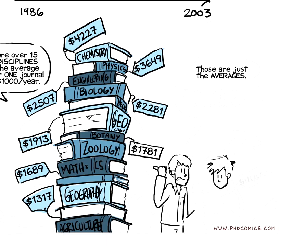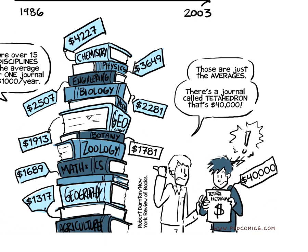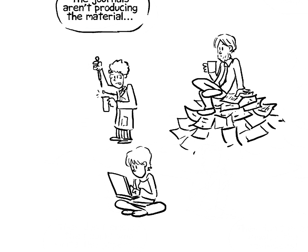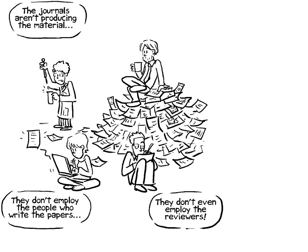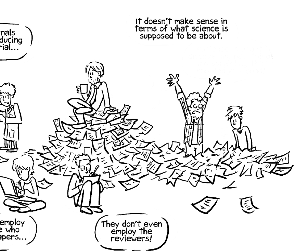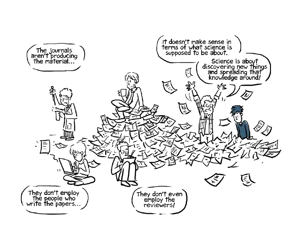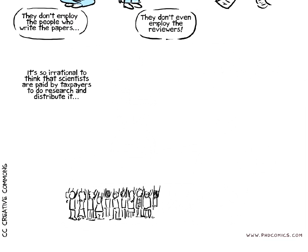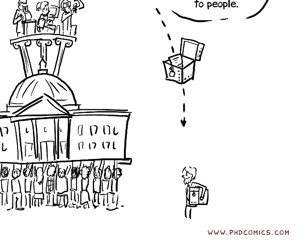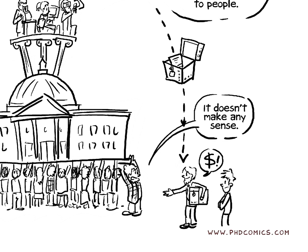And those are just the averages. There's a journal called Ketrahedron that's $40,000. The journals aren't producing the material. The journals don't employ the people who write the papers. They don't even employ the people who review the papers. And it doesn't make a lot of sense in terms of what science is supposed to be about. It's supposed to be about discovering new things and spreading that knowledge around. It's so irrational to think that scientists are paid by the government to do research, and then two years of work by 20 people is compressed into a paper and then not made available to people.